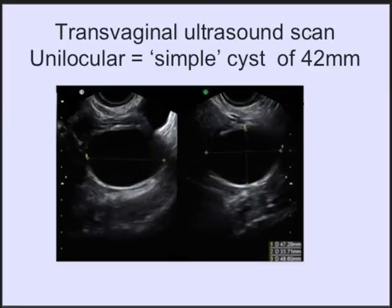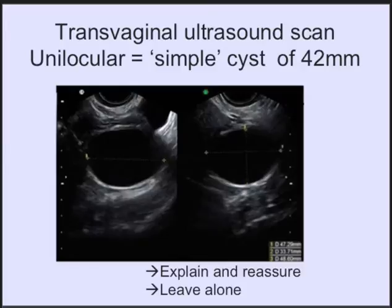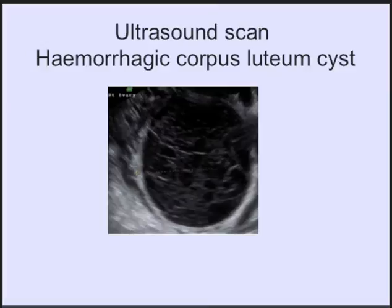Here is an example of a transvaginal ultrasound scan. We see here a unilocular cyst — black fluid — with clear increased echogenicity. The measurements add up to an average size of 42 millimeters. So the management should be explanation, reassurance, and maybe offer some analgesia. No operation.